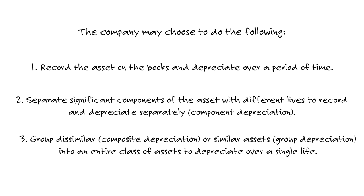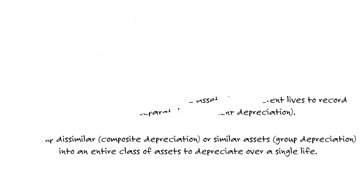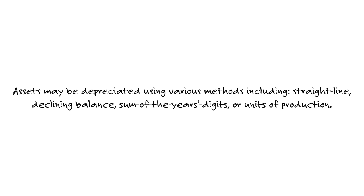If they talk about grouping assets — if they're dissimilar, we use the term composite depreciation; if they're similar assets, we call it group depreciation. In either case, we take that entire class of assets and depreciate it over a single life. Assets can be depreciated using various methods: straight line, double declining balance, sum of the year's digits, or units of production. Units of production converts depreciation from a fixed cost to a variable cost.